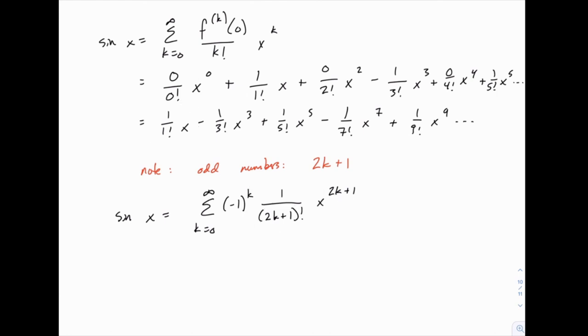When k equals 2, we get negative, and then 3 for the factorial and the power. And it continues from there. So the tricky part with this sine example is not so much finding the pattern as it is clearing out all the zeros and then finding a compact way of writing down the form of the answer that remains.